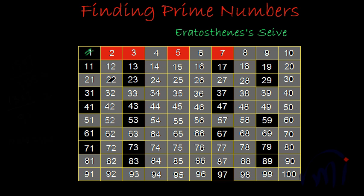Continuing in the first row, eight is already in grey, nine is already in grey, and ten is also in grey. That means we have already struck off all multiples of eight, nine, and ten. After this we need not check any further numbers in the first row.